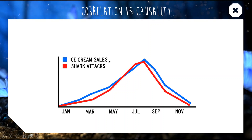There's no common sense link between ice cream sales causing shark attacks or vice versa. These two are linked together because they are affected by the weather.